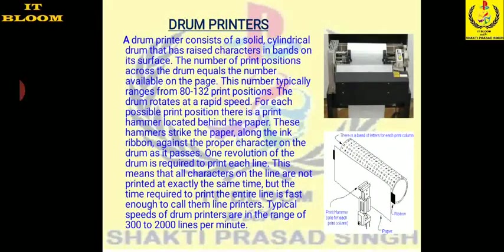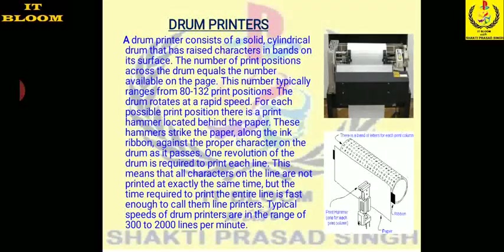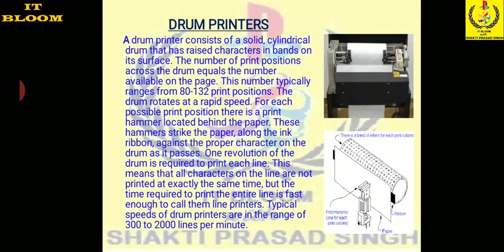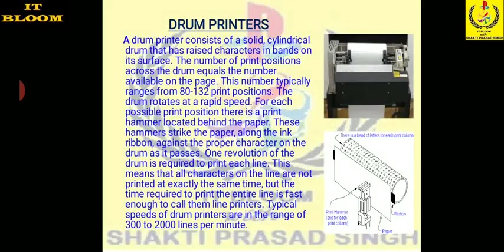A drum printer consists of a solid cylindrical drum that has raised characters embossed on its surface. The number of print positions across the drum equals the number available on the page, typically ranging from 80 to 132 print positions. The drum rotates at a rapid speed, and for each possible print position there is a print hammer located behind the paper. These hammers strike the paper along the ink ribbon against the proper character on the drum as it passes.